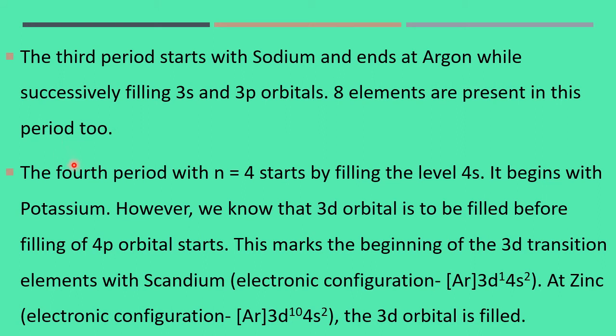The fourth period with N equal to 4 starts by the level 4s. It begins with potassium, atomic number 19. However, we know that 3d orbitals is to be filled before filling of 4p orbitals starts according to the n plus l rule. This marks the beginning of the 3d transition elements with scandium, atomic number 21. At zinc with electron configuration argon 3d10 4s2, the 3d orbital is filled. So 18 is the capacity of the fourth period.